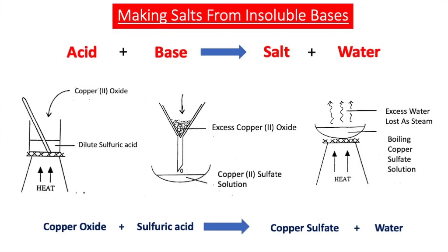In our last video lesson we discussed in detail how to make a salt from the reaction of an acid and an insoluble base — in other words, a base that is not an alkali. This method had essentially three main steps. The first step was to add our insoluble base to our acid and warm it up using a Bunsen burner to speed up the reaction.